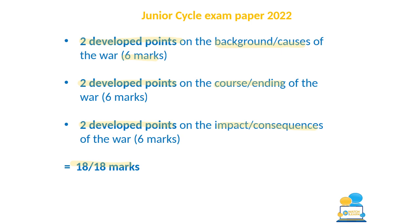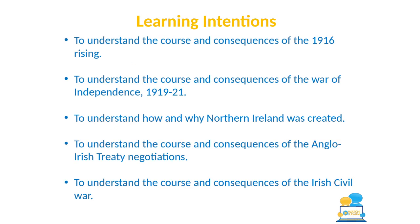That's a brief explanation of the marking scheme from the most recent Junior Cycle history exam paper. Today's learning intentions: we'll look at the cause, course and consequence of the 1916 Rising; the course and consequences of the War of Independence; how and why Northern Ireland was created; the course and consequences of the Anglo-Irish Treaty negotiations; and the course and consequences of the Irish Civil War.